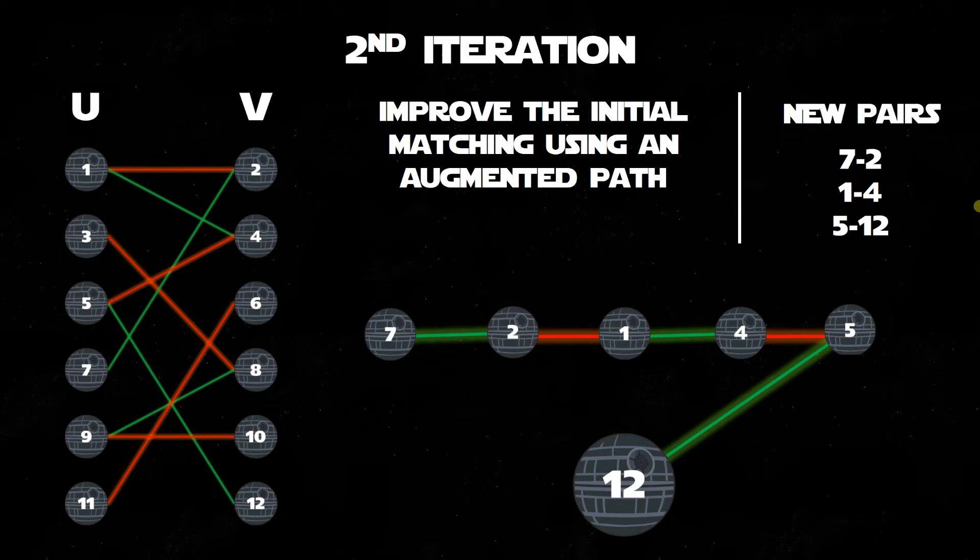We can use the new pairs generated from this matching and the symmetric difference of them and our old matching to improve our matching M. As shown on the left, you can see the changes we make to the old matching to create the final cardinality matching to be outputted by the algorithm.